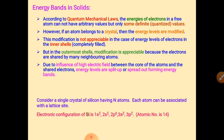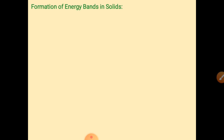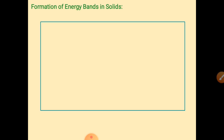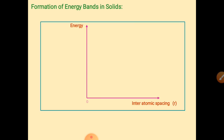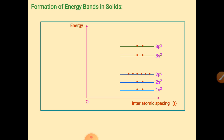The total number of electrons is 14. Now, for the formation of energy bands in a solid, we draw a graph of energy versus interatomic spacing. These are energy levels with different electrons: 1s2 has two electrons, 2s2 has two electrons, 2p6 has six electrons, 3s2 has two electrons, and 3p2 has two electrons.